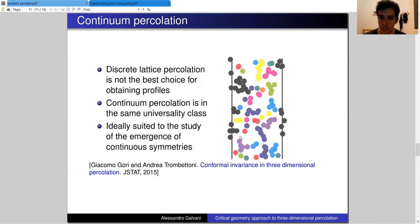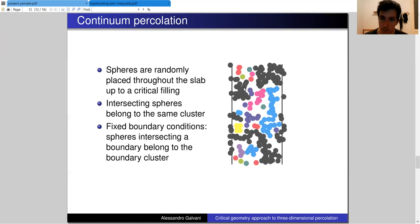We add one at a time spheres into our bounded domain. We stop once we have reached a critical filling ratio. If the spheres intersect, they belong to the same cluster. We're interested in systems with fixed boundary conditions, which means that if the sphere intersects either of the two boundaries, it automatically gets included into the same cluster.